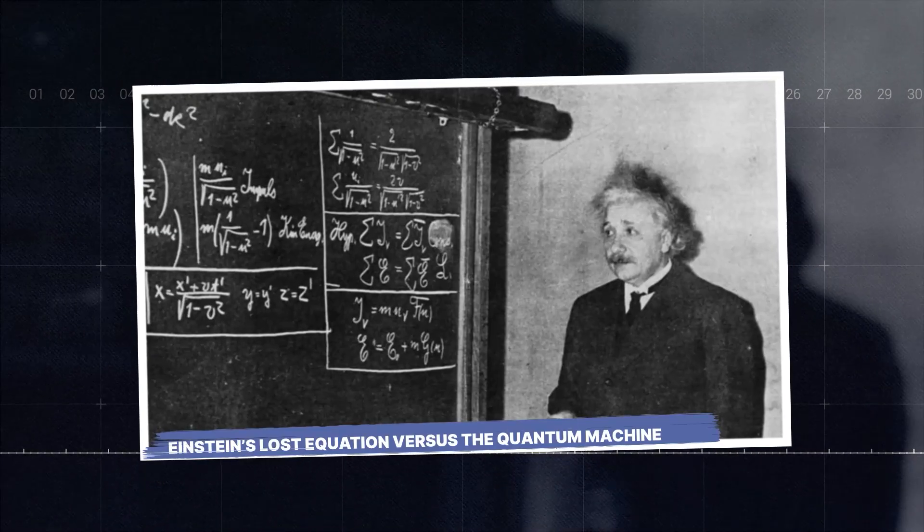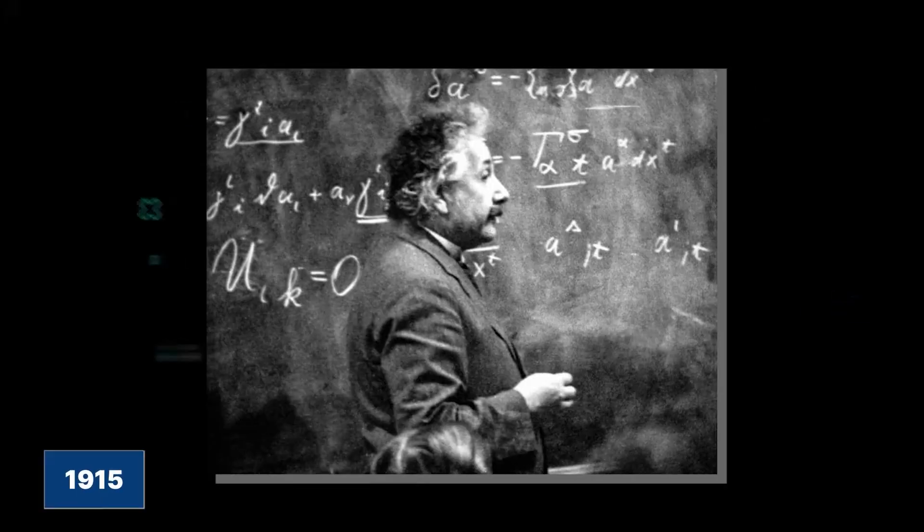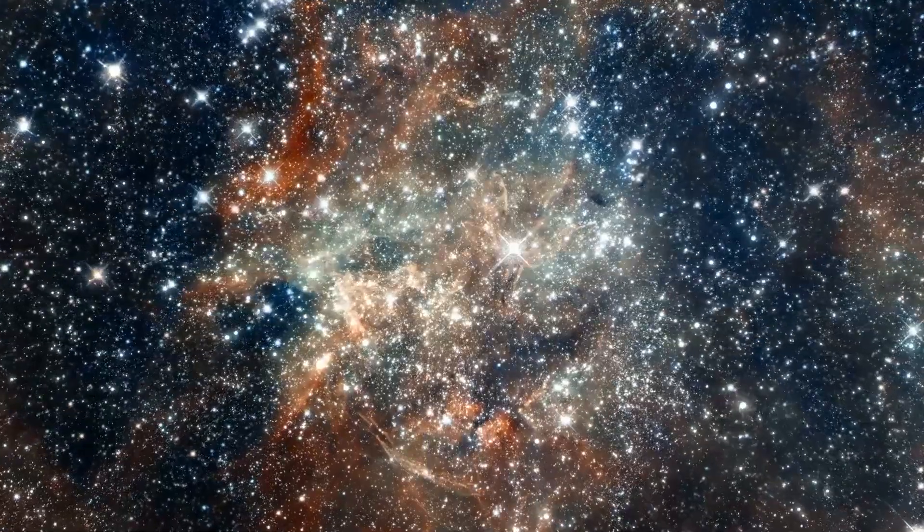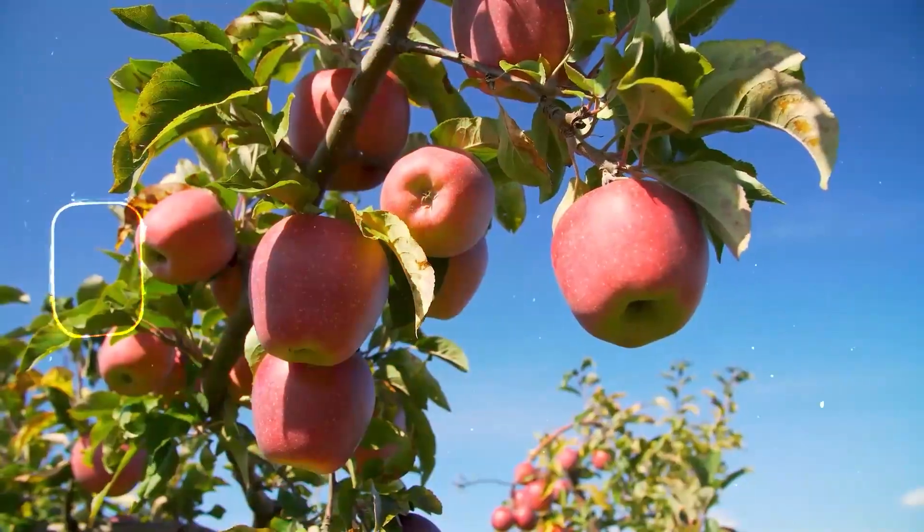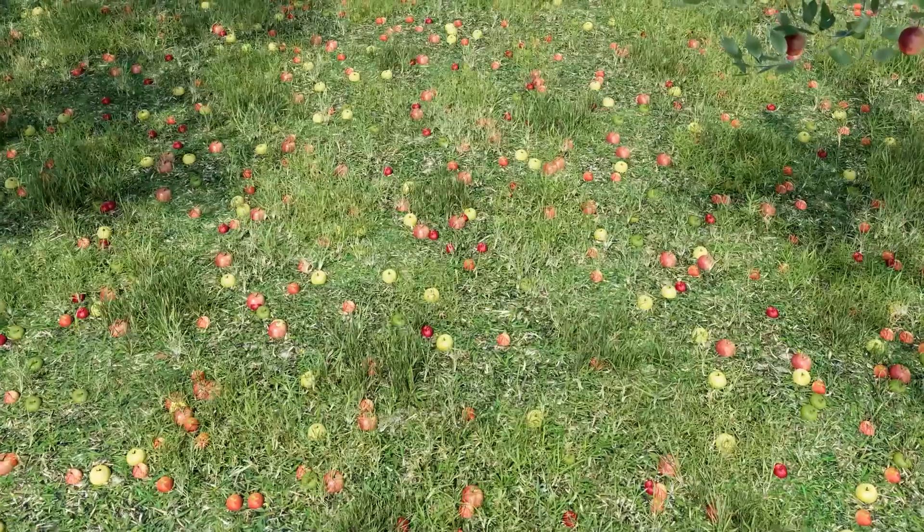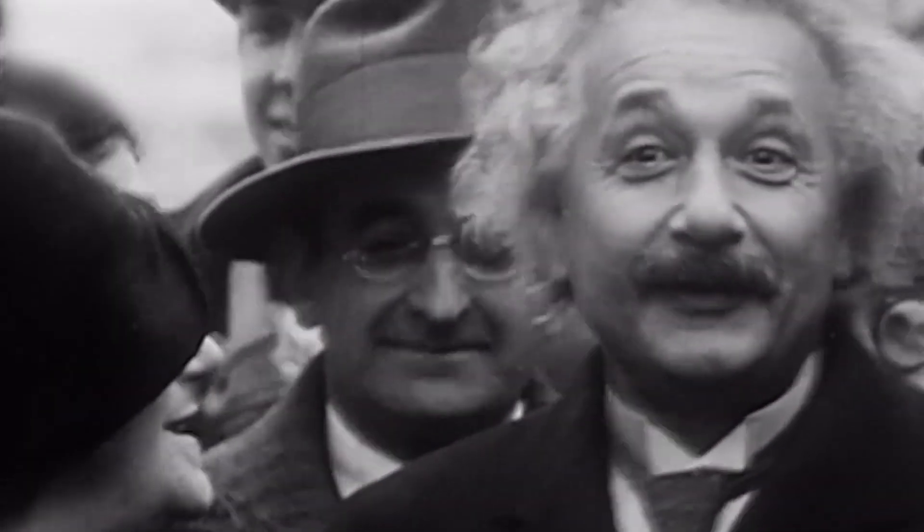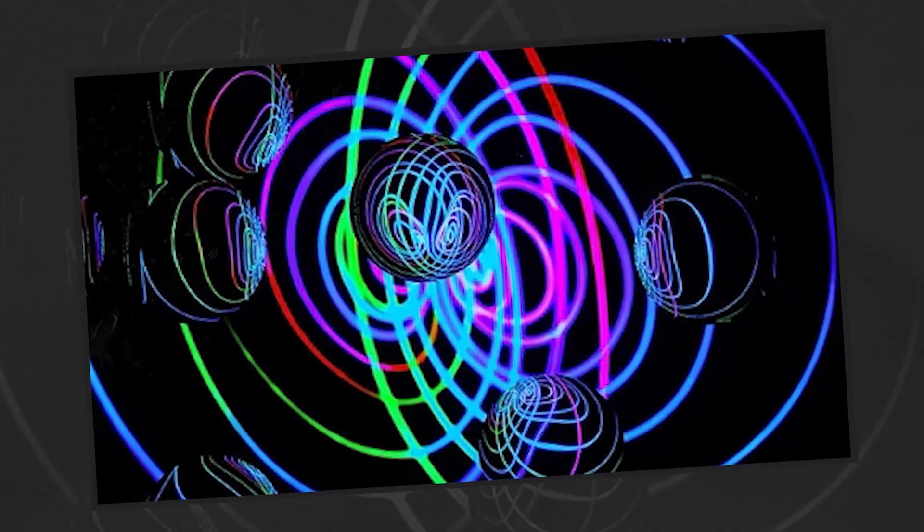Einstein's lost equation versus the quantum machine. Albert Einstein, the father of modern physics, gifted humankind the field equations of general relativity in 1915. Space and time stop being a silent stage. They flex like a trampoline beneath every planet and star. Apples no longer fall because an invisible force grabs them. They fall because Earth's mass dents the cosmic canvas. Yet for Einstein, this triumph is only a waypoint. He dreams of one grand melody, a unified field that merges gravity with light itself.